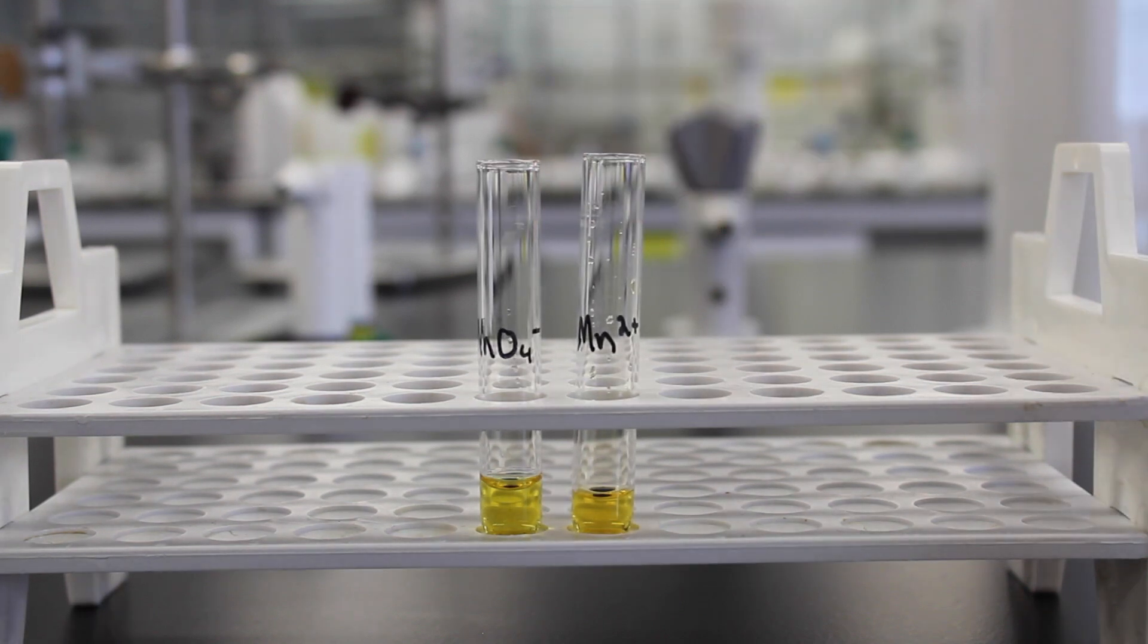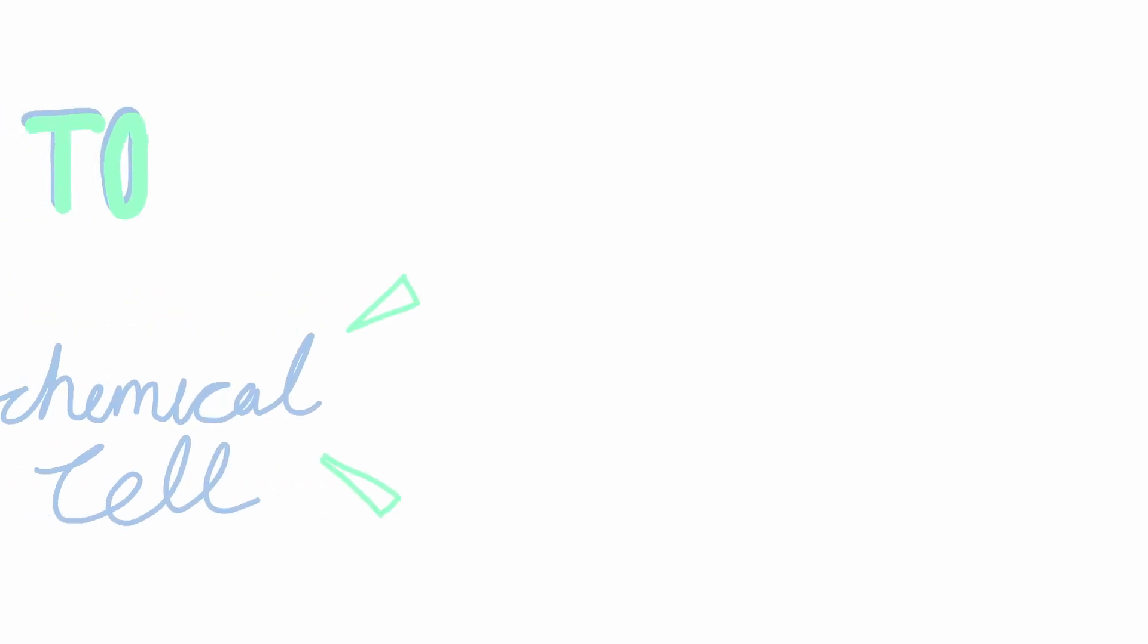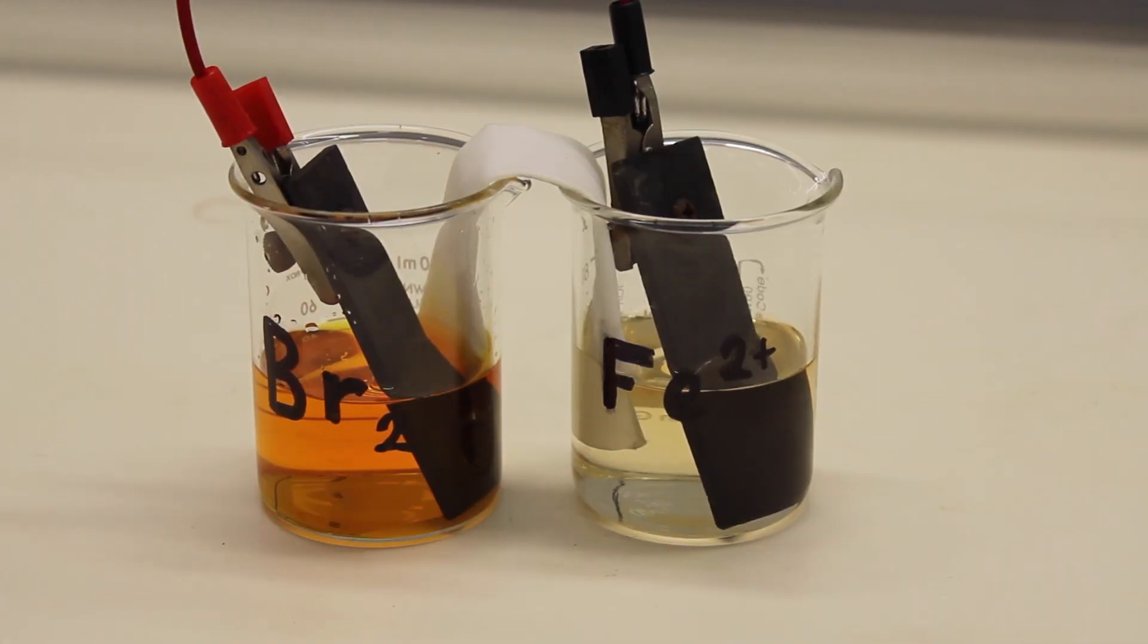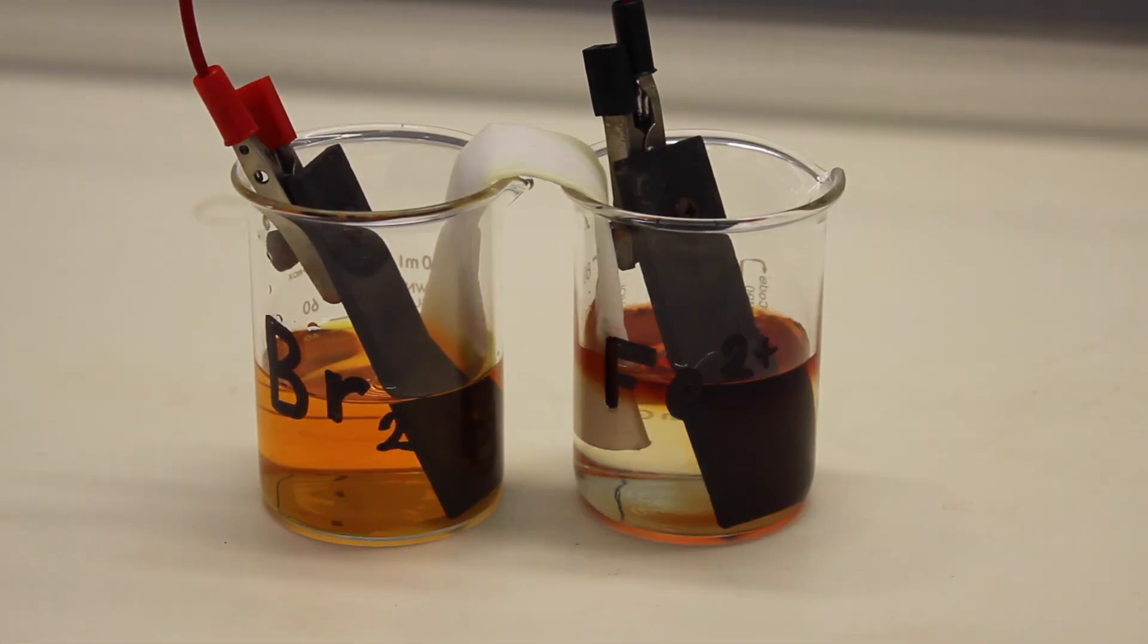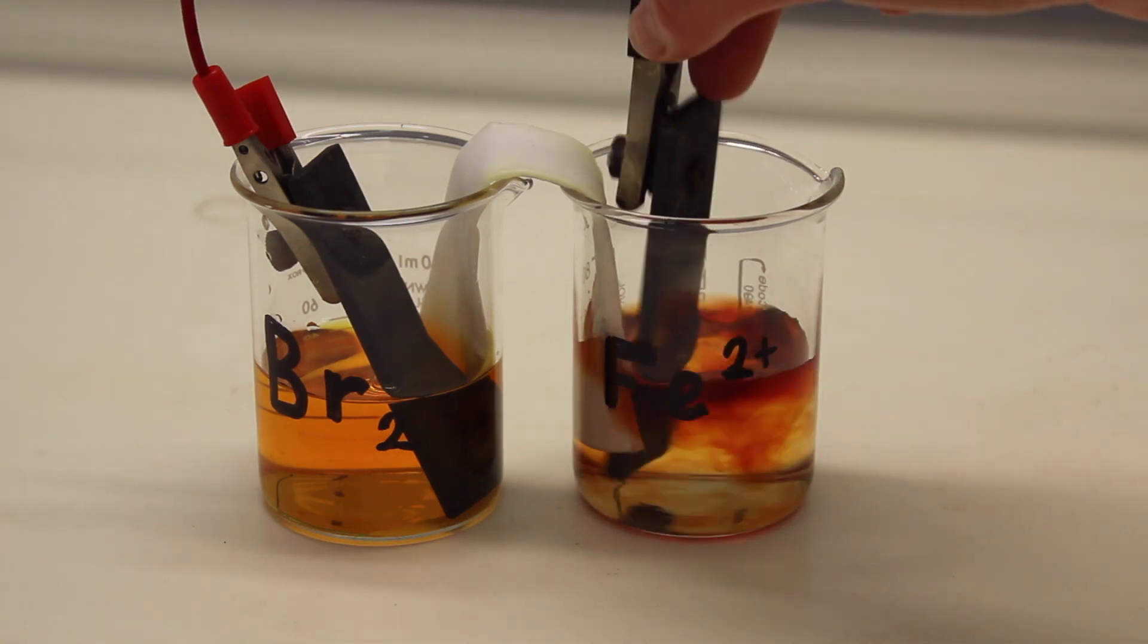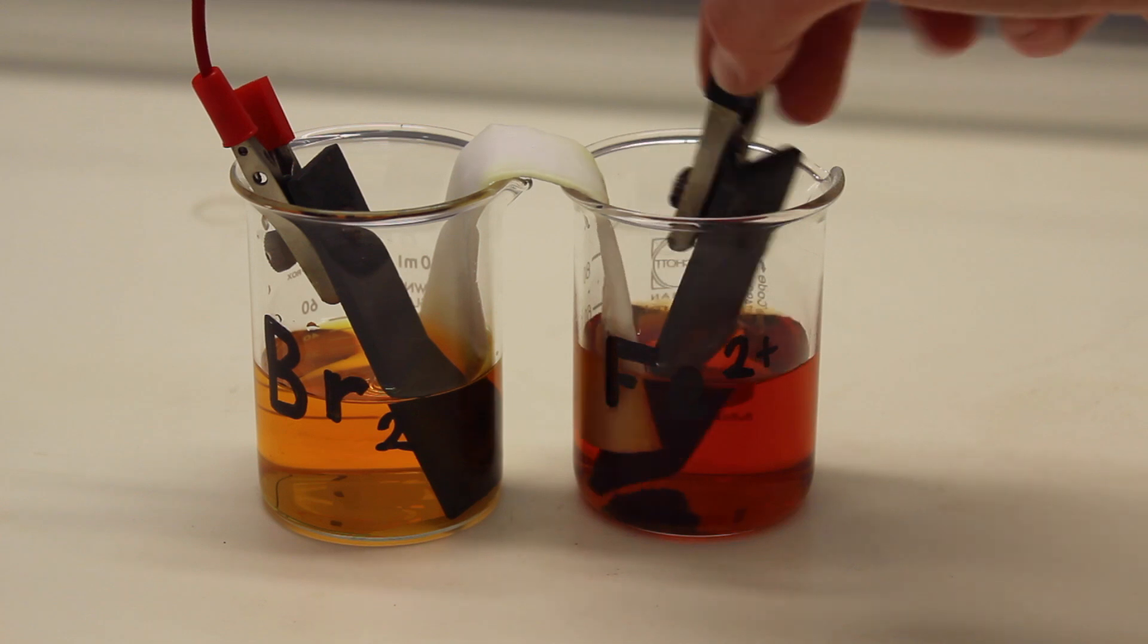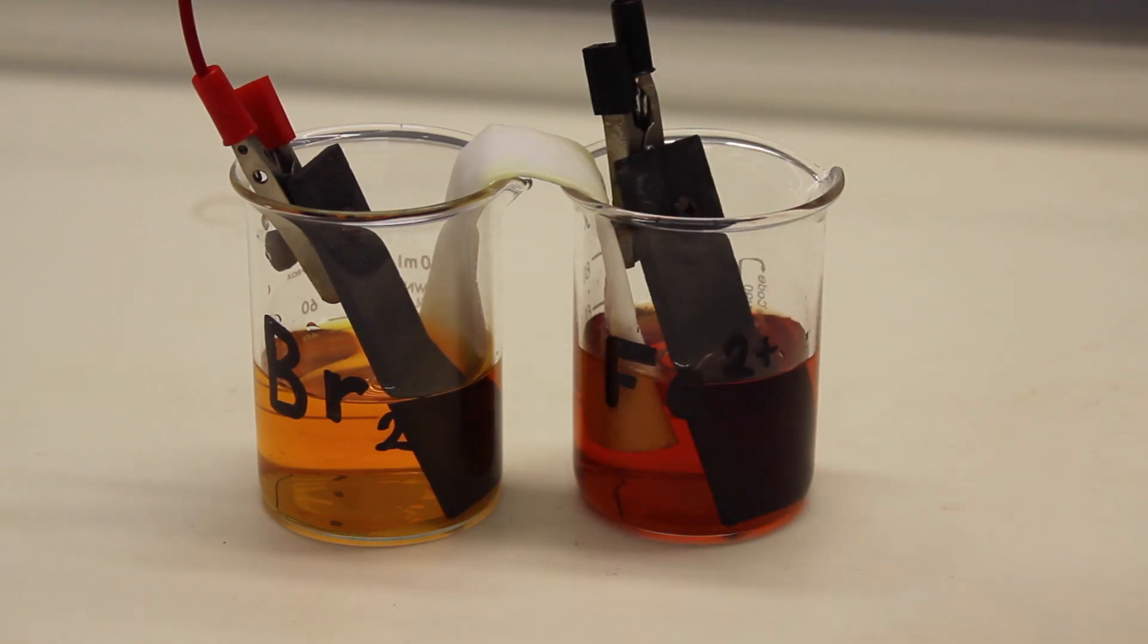You should now be able to rank all five of your couples against each other. Before we wrap up, let's go back to the fume hood and check on our electrochemical cell that we set up at the start of the lab. As you can see from the thiocyanate ions we added, iron 3+ has been formed in the right-hand beaker. This has been enabled by the ion bridge and the copper wire, allowing electrons to flow between the two solutions.